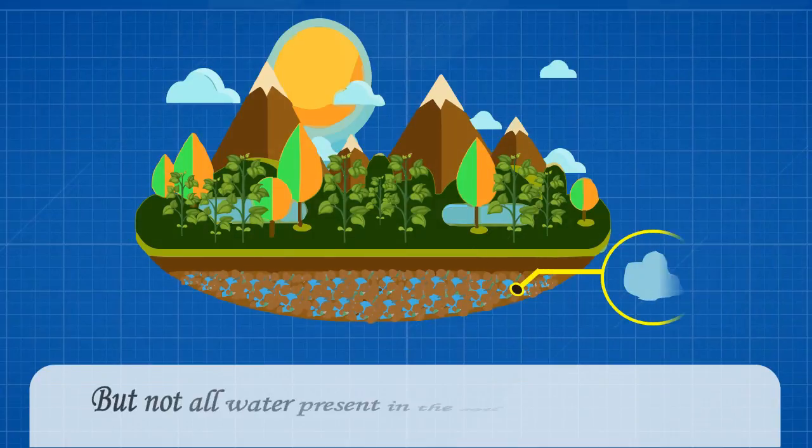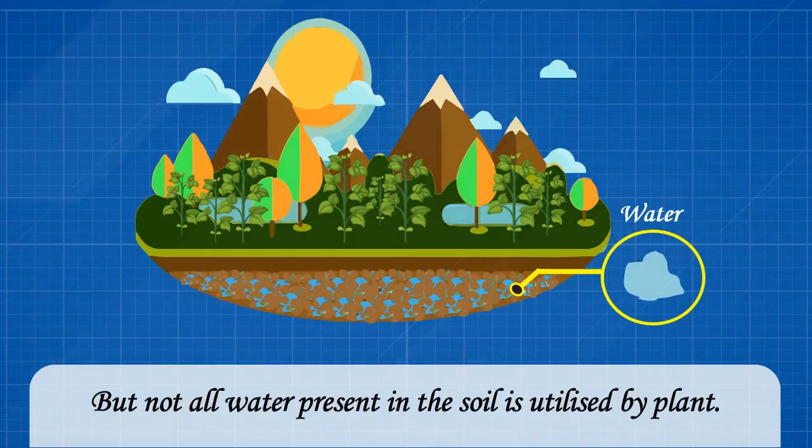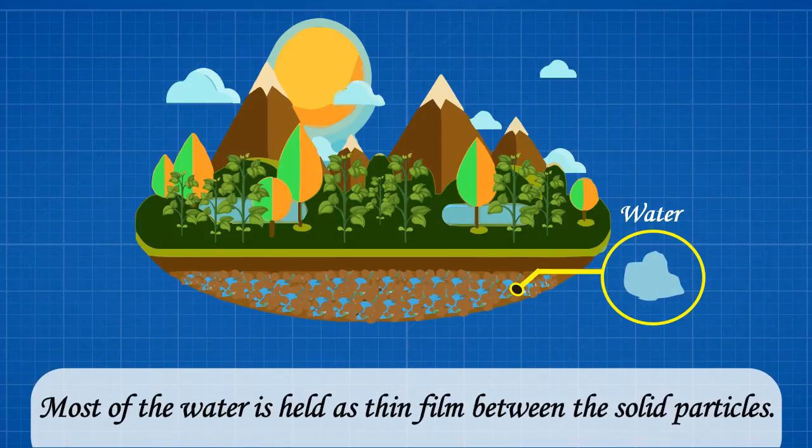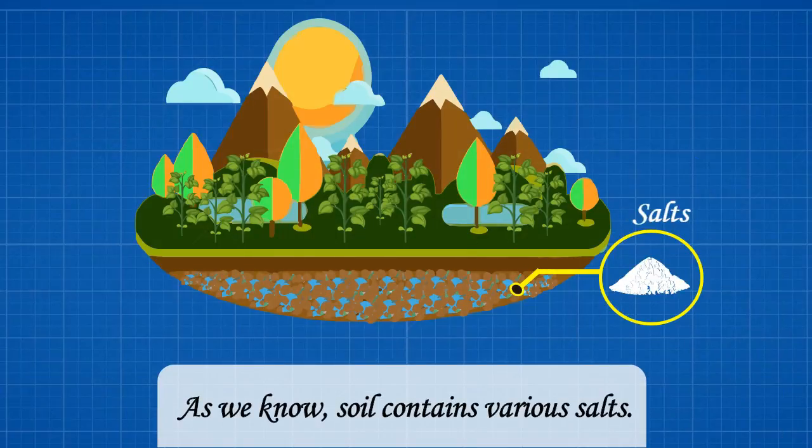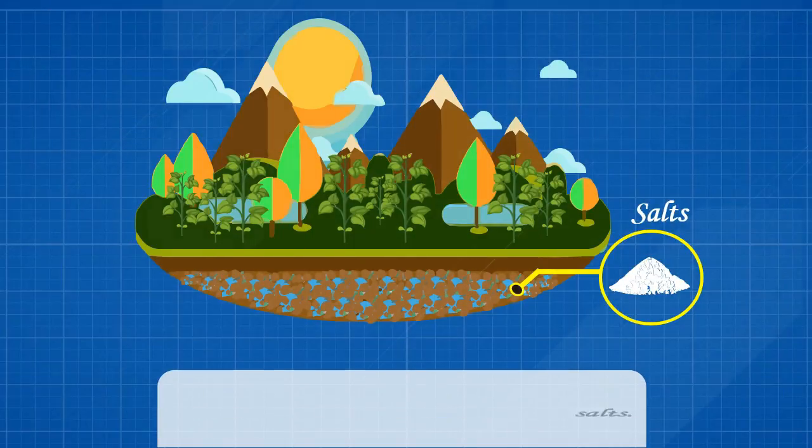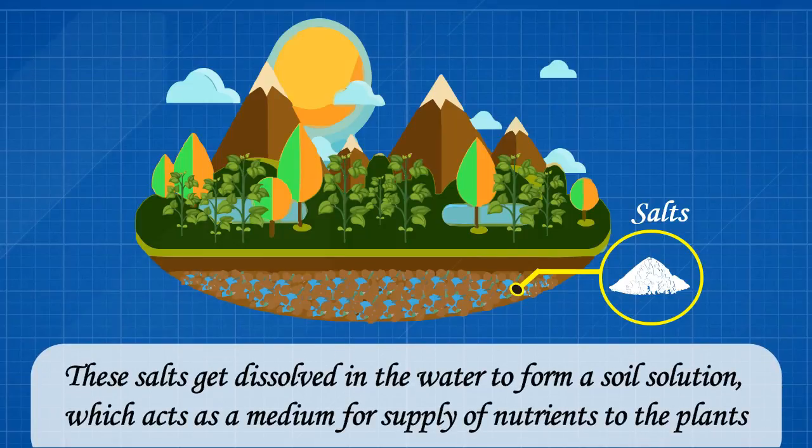But not all water present in the soil is utilized by plants. Most of the water is held as a thin film between the solid particles. As we know, soil contains various salts. These salts get dissolved in the water to form a soil solution.